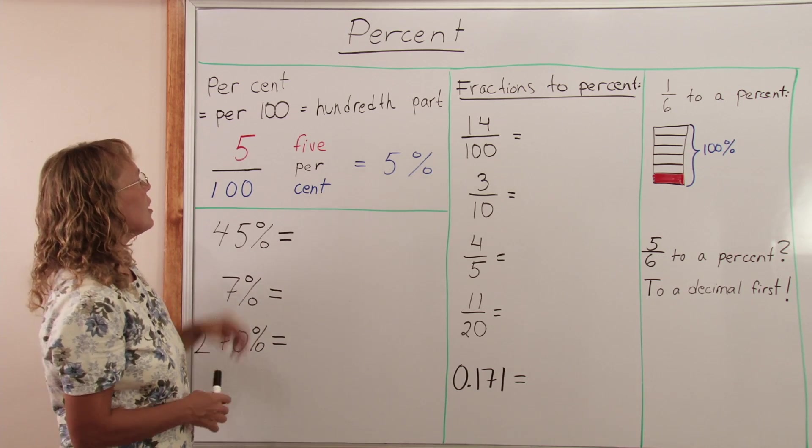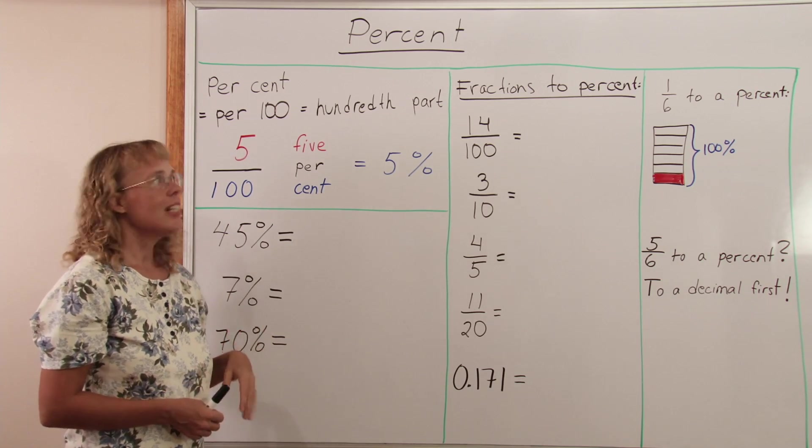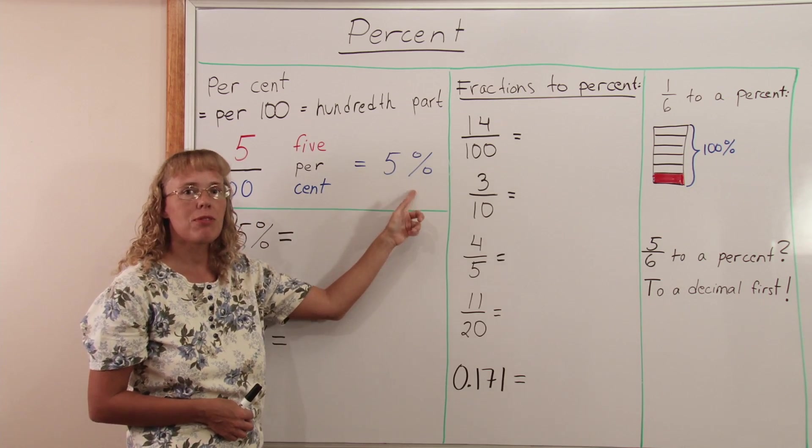An example will make this more clear. If I have here five over hundred or five hundredths, then that is five percent. Five percent. This is our common symbol for percent.